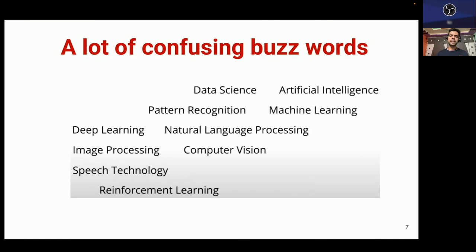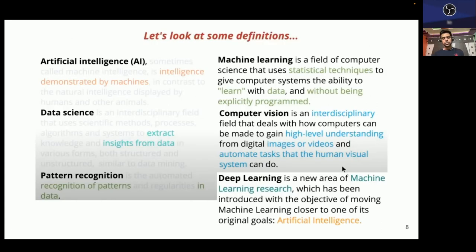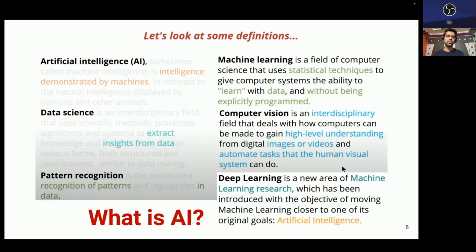The buzzwords include data science, ML, DL, NLP, computer vision, image processing, speech technology, and reinforcement learning. If you know all these things, perfect. If not, as a beginner we should know about all these buzzwords — then only we know what our interest is and where we fit. Whenever there's confusion, we go and look at some definitions. But instead of spending time on those definitions, I'll explain in a different way to answer a specific question: what is artificial intelligence?